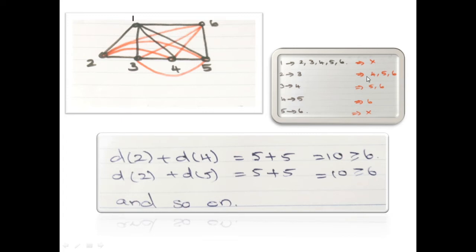And two is now newly adjacent to four, five, and six. So two is adjacent to four, five, and six. And three is adjacent to five and six. Again, four is adjacent to six. So that is notated here as a red line.